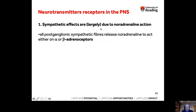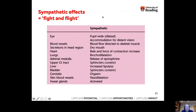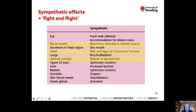Key take-home message: sympathetic effects are largely due to noradrenaline acting on two receptor types — alpha and beta adrenoceptors. We'll hear more about these throughout the course. Sympathetic fight-and-flight effects include increasing the heart's rate and force of contraction, directing blood flow to skeletal muscles so we can run or attack, and releasing adrenaline to activate the sympathetic nervous system.